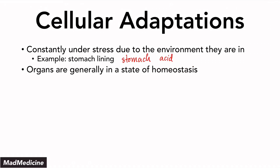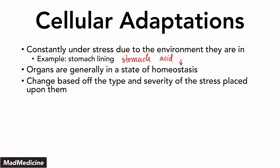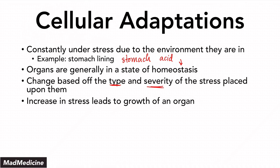Organs generally are in a state of homeostasis under normal conditions. In an overall, macro sense, our organs are in a state of homeostasis, and that state of homeostasis is often maintained even if the organ grows or shrinks for a small period of time. All of these changes that occur in the body are usually based on the type and severity of the stress placed upon it. An increase in stress is eventually going to lead to a growth of an organ, because there is more pressure placed on it, and for the organ to function properly it has to grow to accommodate that stress.